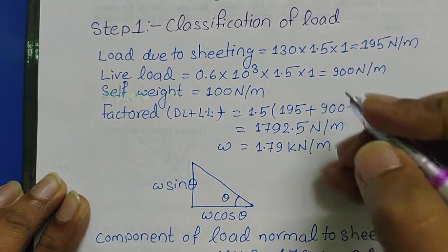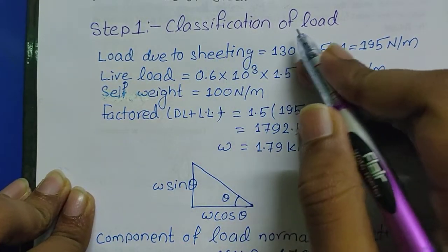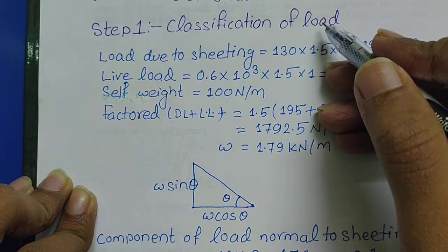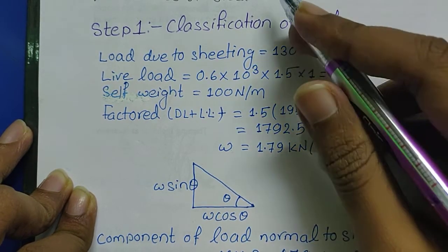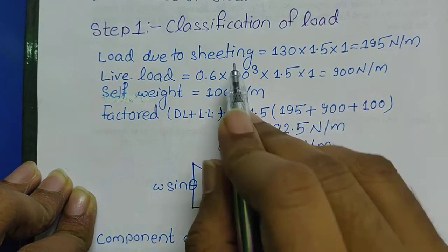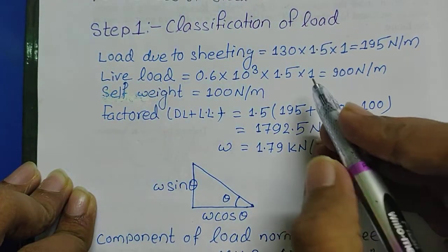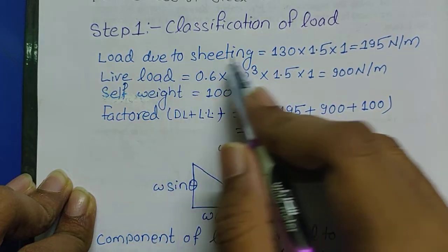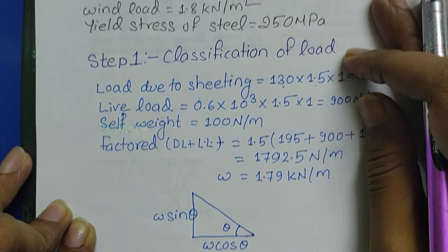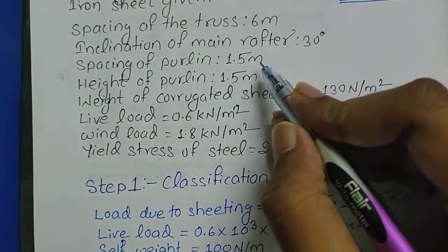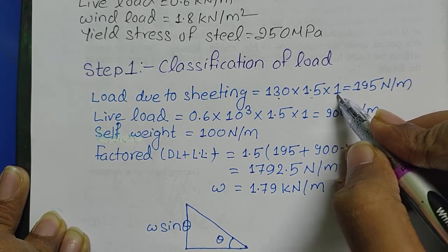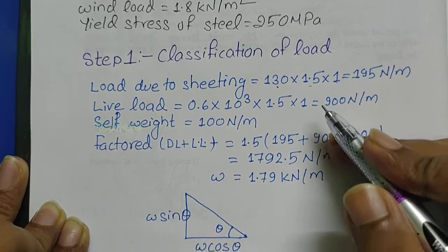Here comes Step 1. In Step 1 we are going to classify the loads. The loads may be due to dead load or live load. Dead load may be snow load or load of the seating. In the question there is the weight of corrugated seating. We're going to find the load that is acting per unit length or between the spacing of the purlin. In the question there was load due to corrugated seating 130, so I multiplied it with 1.5, where 1.5 is spacing of the purlin. I have taken the depth as 1 meter. This is our weight due to seating.